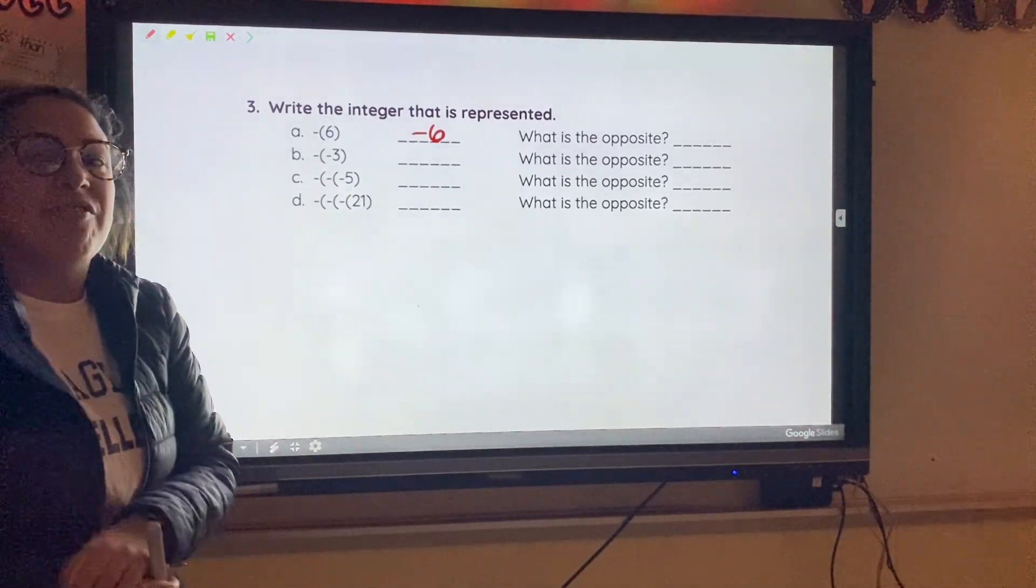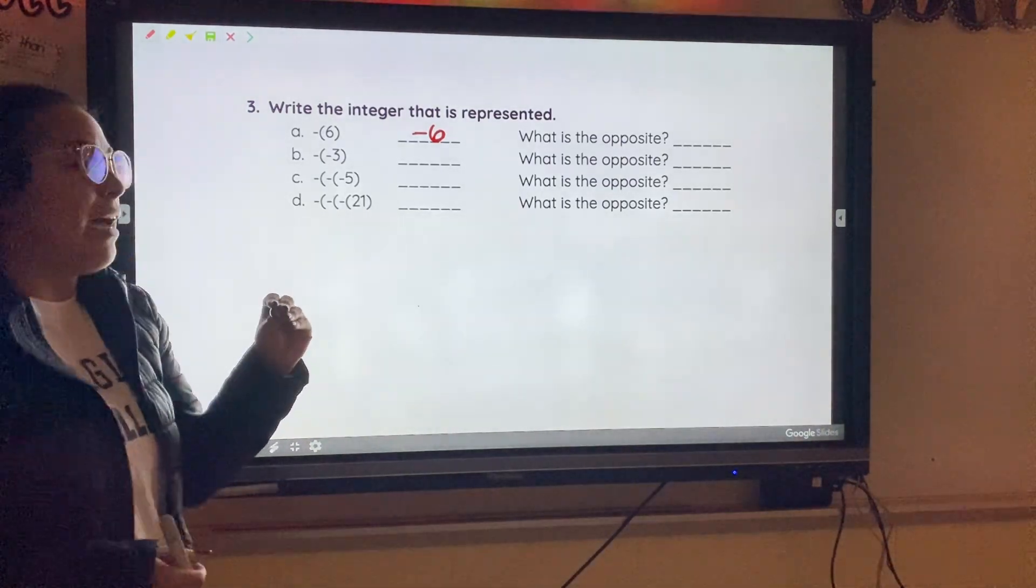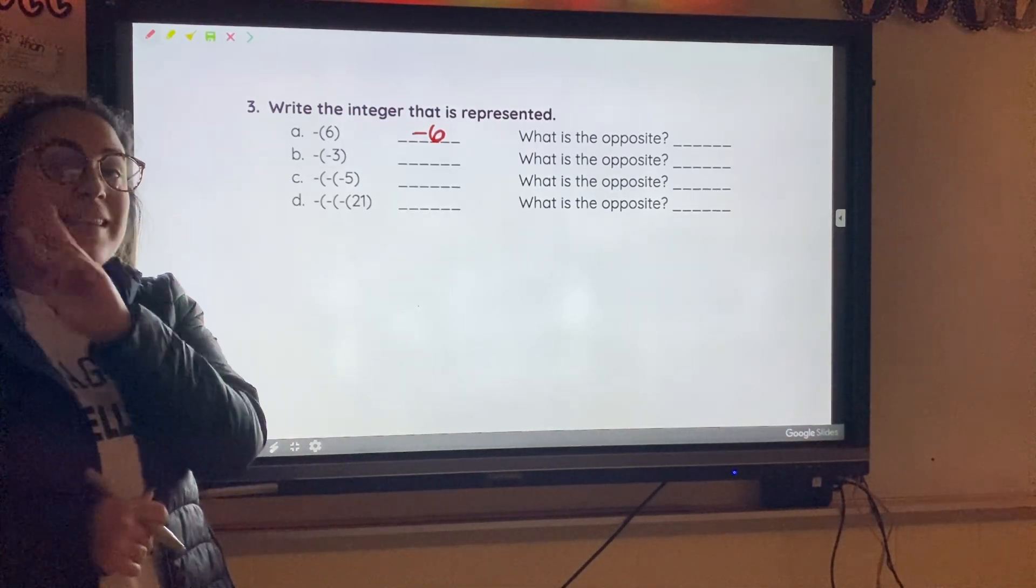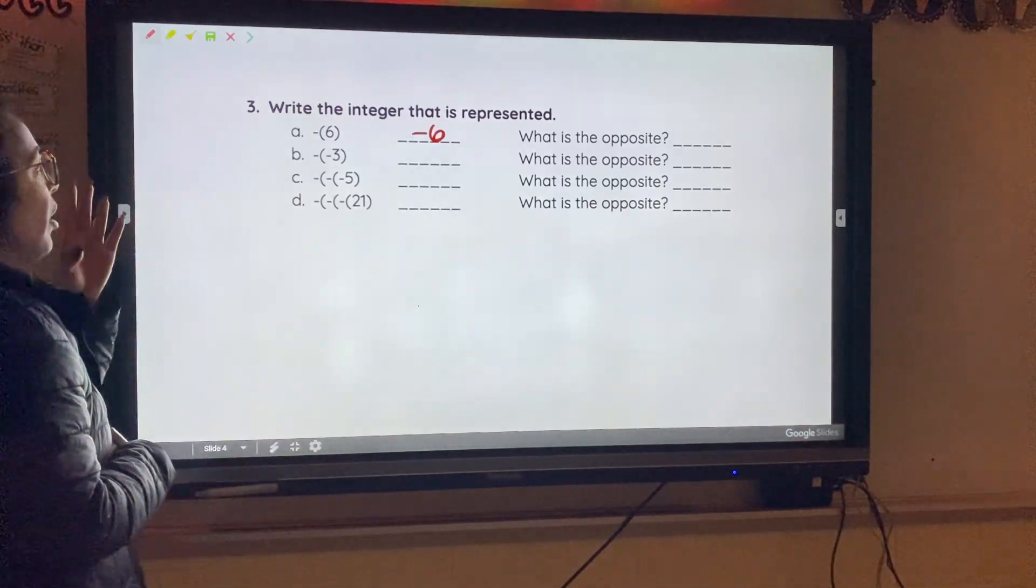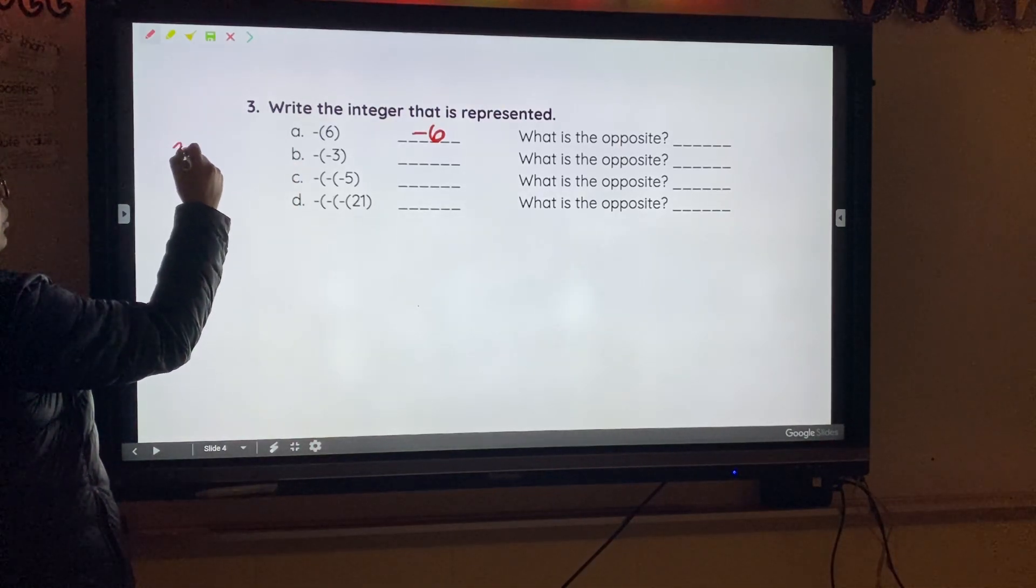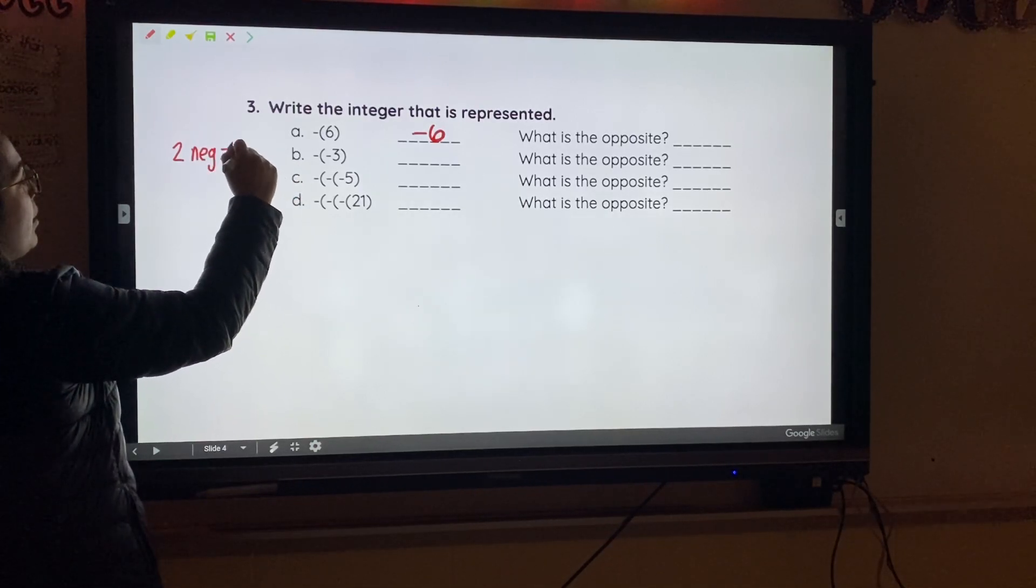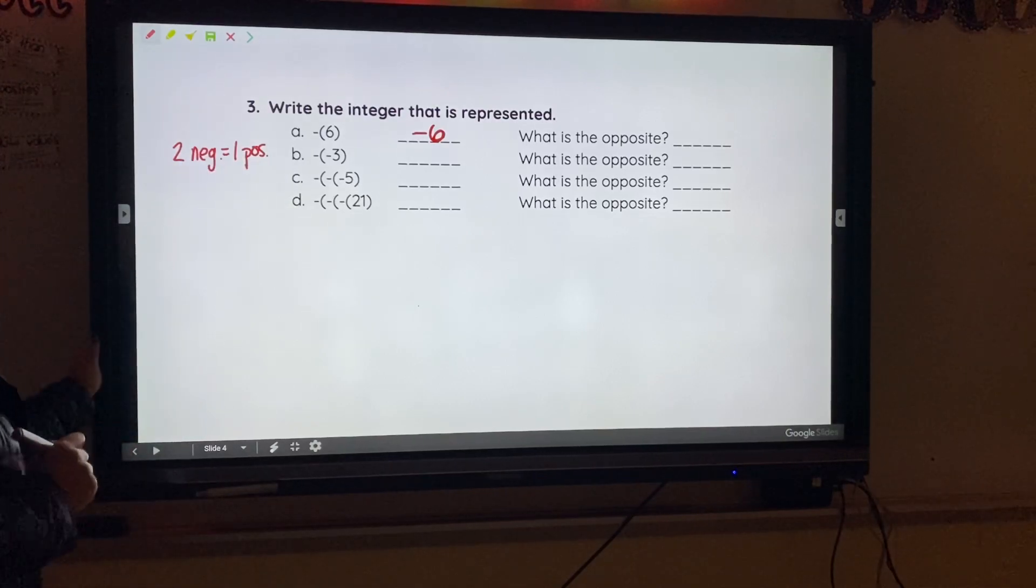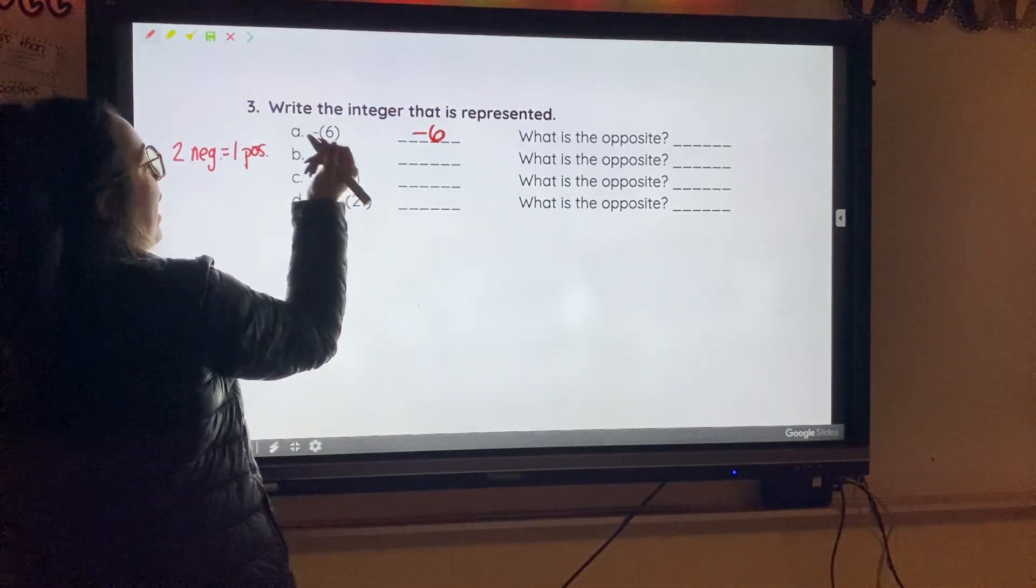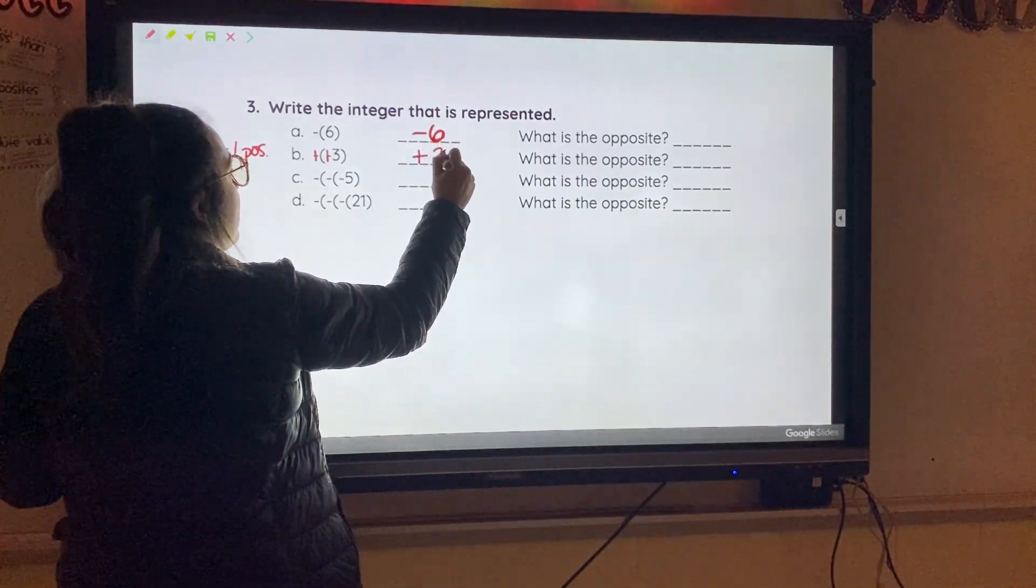But now I have two negatives. I have a negative on the outside and a negative on the inside. When you have two negatives, that's going to make it a positive. So, I'm going to put here, two negatives equal one positive. So that means, if you see two negatives next to each other, I like to cancel them out and make them plus signs. And this becomes positive 3.